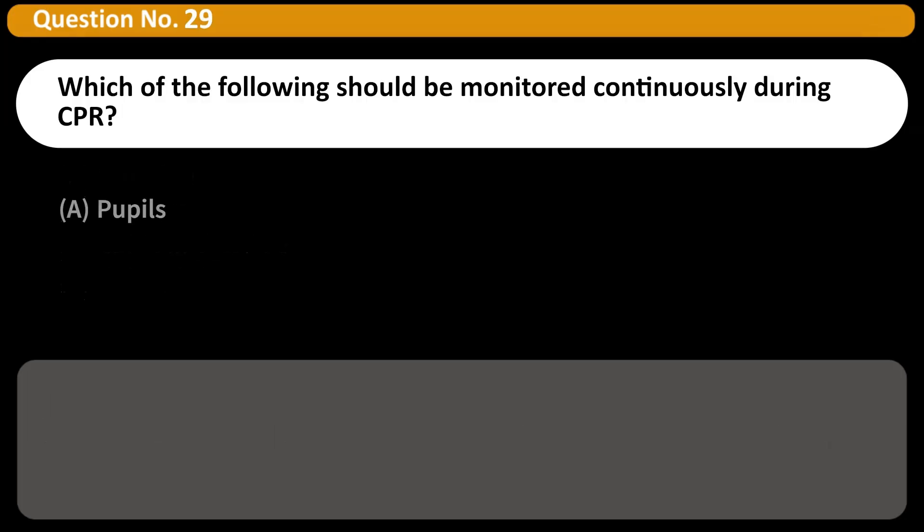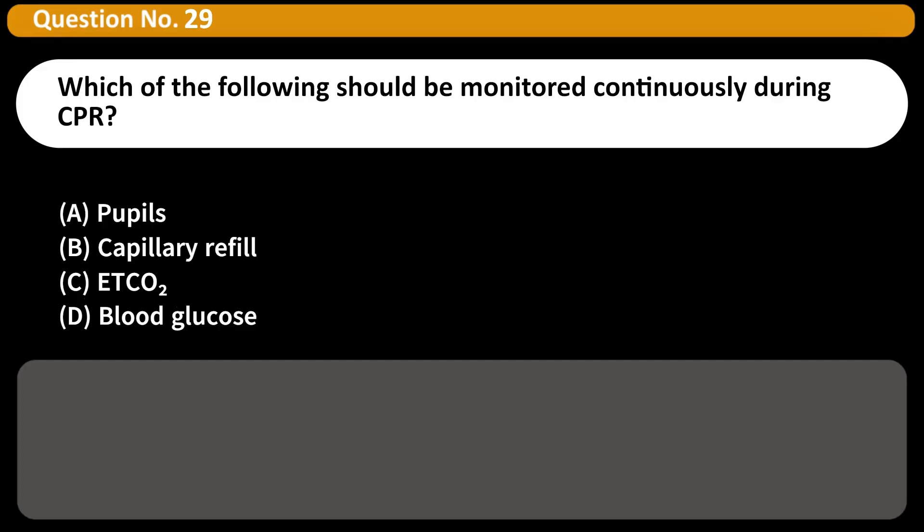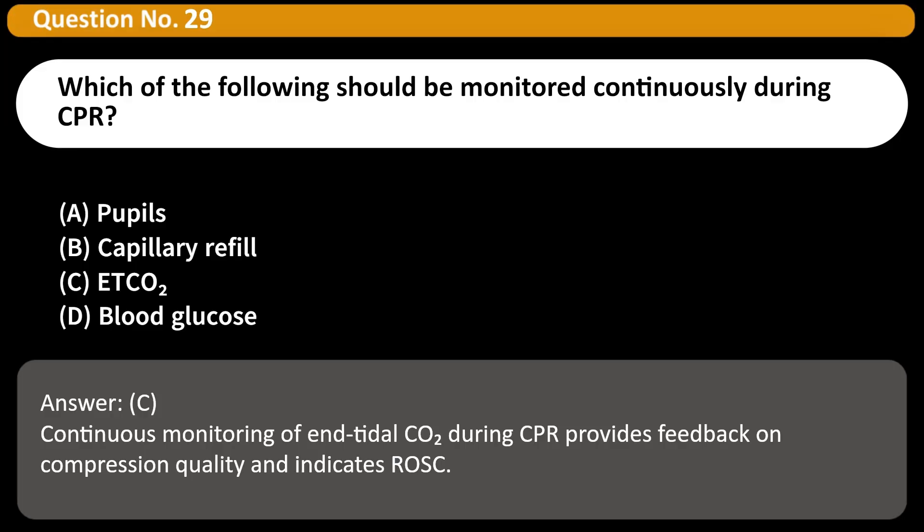Which of the following should be monitored continuously during CPR? A. Pupils. B. Capillary refill. C. EtCO2. D. Blood glucose. Answer: C. Continuous monitoring of end-tidal CO2 during CPR provides feedback on compression quality and indicates ROSC.